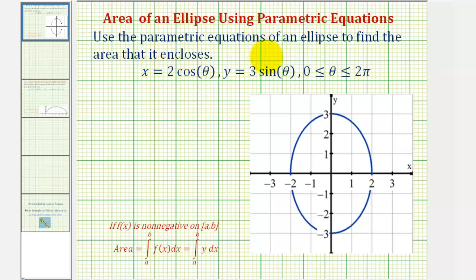We're asked to use parametric equations of an ellipse to find the area enclosed by the ellipse. We have x equals two cosine theta and y equals three sine theta, where theta is on the closed interval from zero to two pi.